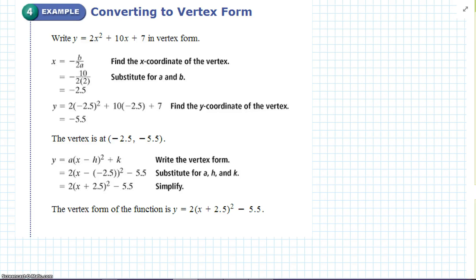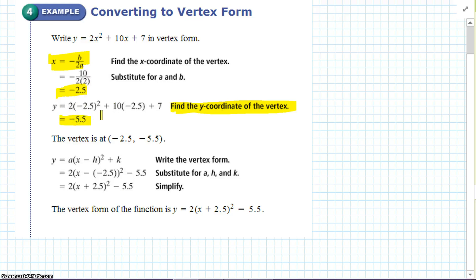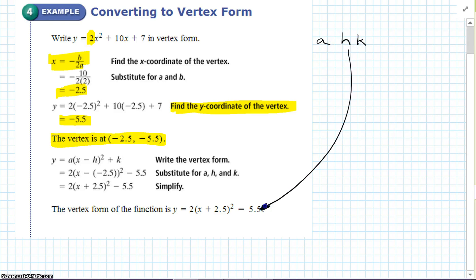Converting. Write y equals 2x squared plus 10x plus 7 in vertex form. First, find the x-coordinate of the vertex using negative b over 2a. Then solve for the y-coordinate of the vertex by plugging x back in — it equals negative 5.5. The a value was already given. Now we have a, h, and k, so we plug them into the vertex form equation.